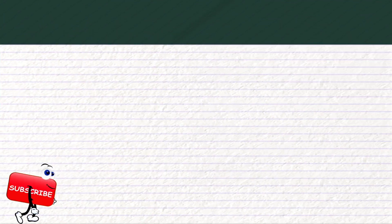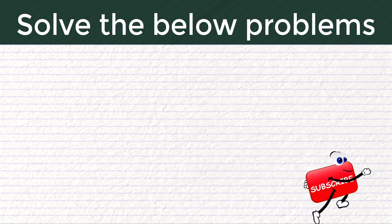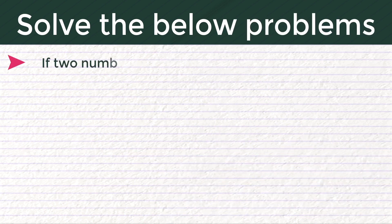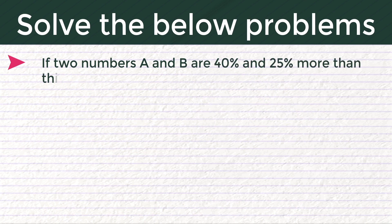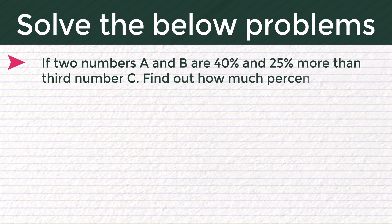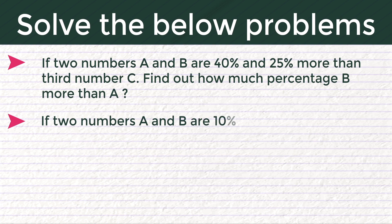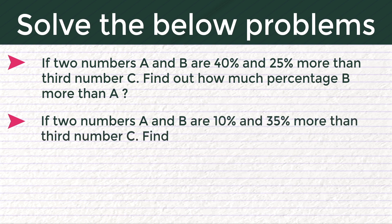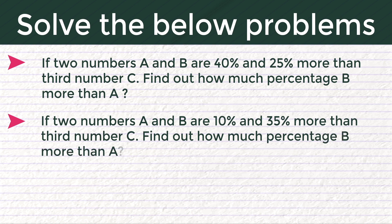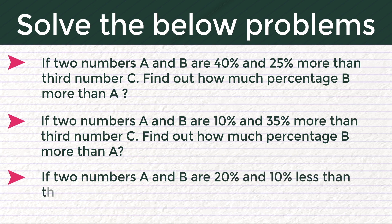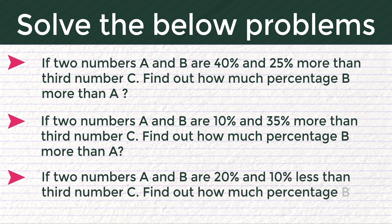If you understand the concept, try solving the problems below and comment your answers. Number one: if two numbers A and B are 40% and 25% more than a third number C, find out how much percentage B is more than A. Number two: if two numbers A and B are 10% and 35% more than a third number C, find out how much percentage B is less than A. Number three: if two numbers A and B are 20% and 10% less than a third number C, find out how much percentage B is less than A.